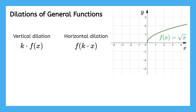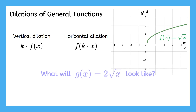Let's go back to a function that we've seen before, the square root of x, to remind ourselves what these dilations look like before trying them out on one over x. Can you predict what the graph of two times the square root of x will look like? The point one comma one moves up to one comma two, because after taking the square root, we then multiply the output by two.